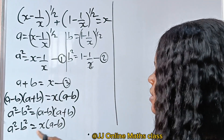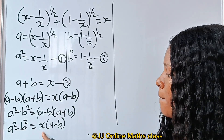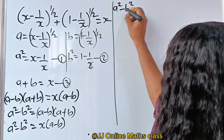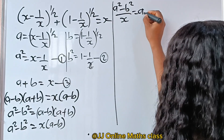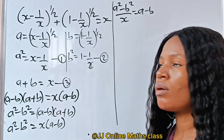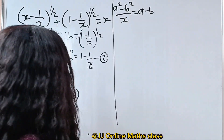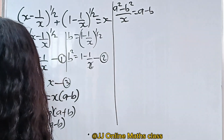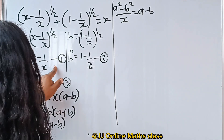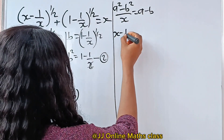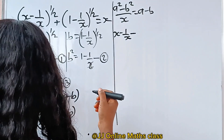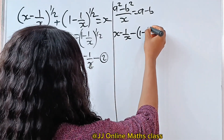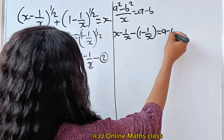Now let's divide both sides of this equation by x. If we do that, we have a squared minus b squared divided by x equals a minus b. Recall that a squared is x minus 1 over x, so we write x minus 1 over x, minus b squared which is 1 minus 1 over x, equals a minus b, and this is divided by x.